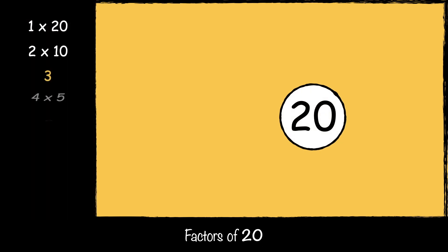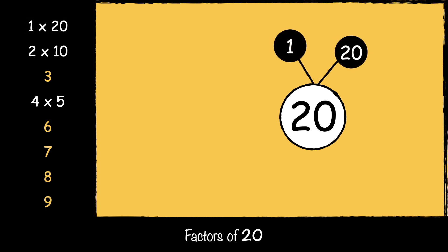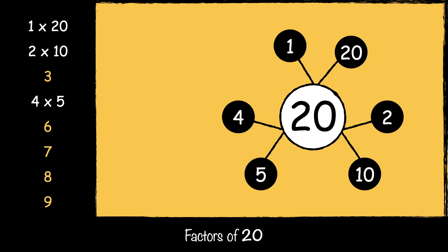Let's start by looking at the factors of 20. Here are the numbers that can be multiplied to make 20: 1 and 20, 2 and 10, 4 and 5. 3, 6, 7, 8, and 9 cannot be multiplied to make 20, so they are not factors of 20.